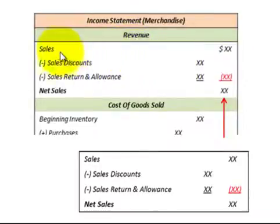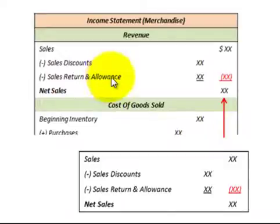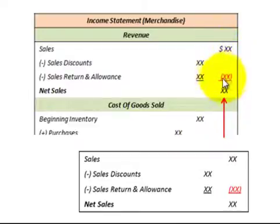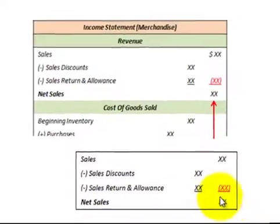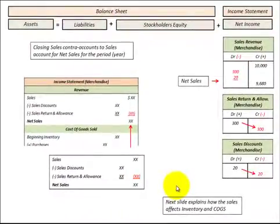In the revenue section of the income statement, we have sales, and then we subtract out the sales discount and the sales returns and allowances. We subtotal those, subtract them from the sales for the period, and get a net sales amount. To summarize: sales minus sales discounts minus sales returns and allowances equals net sales.